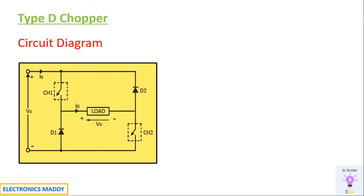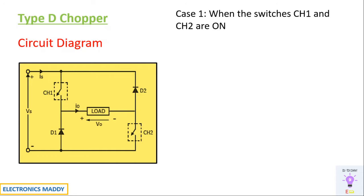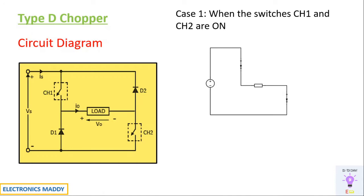This is the circuit diagram of a Type D chopper. The entire working can be analyzed by considering only two cases. For the first case, let us consider when switches CH1 and CH2 are turned on. It will be convenient to consider equivalent circuits, so this is the equivalent circuit when CH1 and CH2 are on.